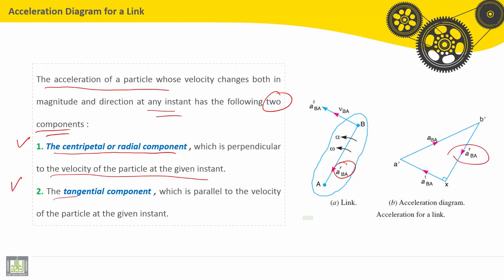Second, the tangential component, which is parallel to the velocity of the particle at a given instant. So, the tangential component A^T_BA is parallel to V_BA.